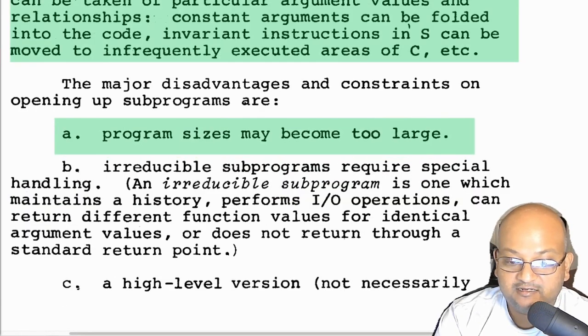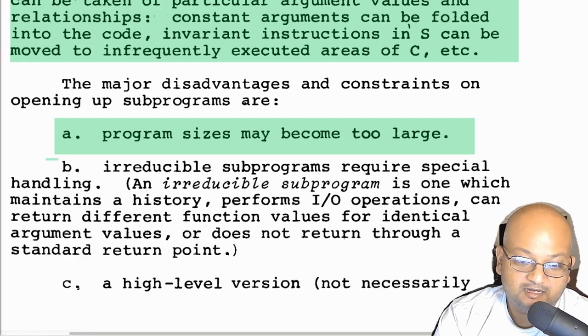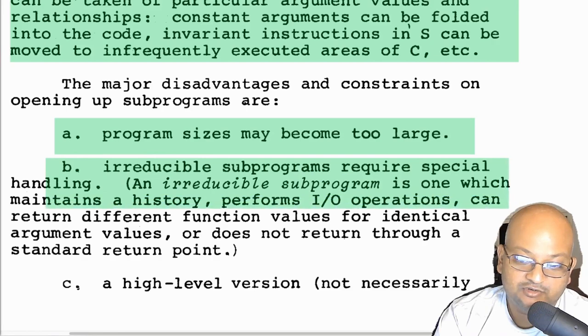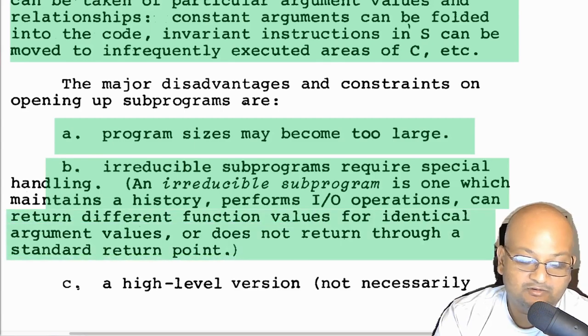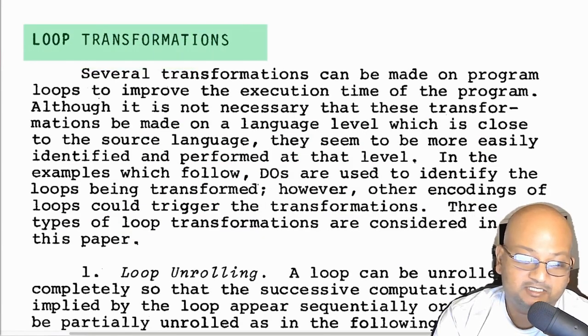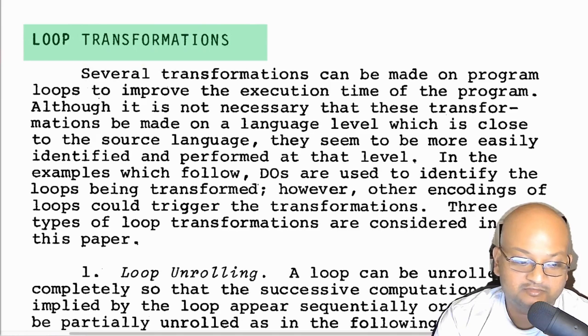One of the biggest downsides of doing procedure inlining is that if you do it indiscriminately, you are going to blow up your code size. Another kind of corner case you have to be careful about when doing inlining is to make sure that special kinds of procedures that maintain a history or that do IO operations or all sorts of other stateful operations are inlined in a way that preserves their semantics.